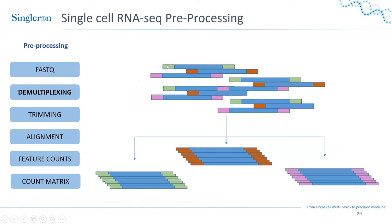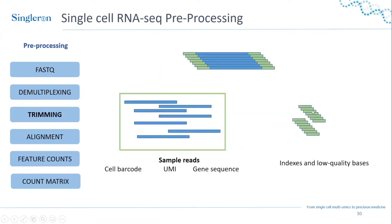When your FASTQ files pass quality control, you can do demultiplexing — separating reads based on which sample they come from using the index sequences. Once you have separate files for each sample, you need to trim your reads: this removes the indexes you no longer need, low quality bases, and any reads that are too short. You want to keep for further analysis the reads containing the cell barcode, the unique molecular identifier, and the gene sequence.